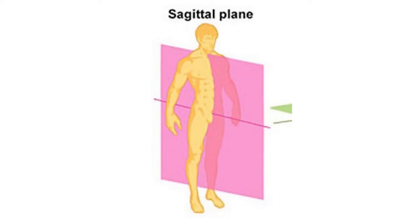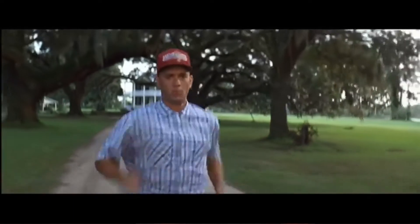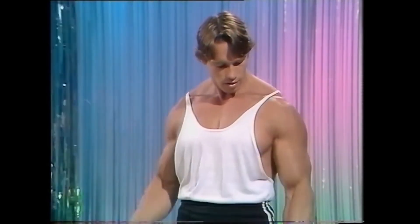The first plane of motion is the sagittal plane. Visualize a large plate of glass dividing my body into left and right halves — it's a vertical plane. Anything that moves parallel to that glass falls in this category. Think of being in a slot canyon or a narrow doorway — you can only move forward and backward. This covers motions of flexion and extension. Examples include walking, running, leg extensions, lunges, front raises, crunches, and curls.